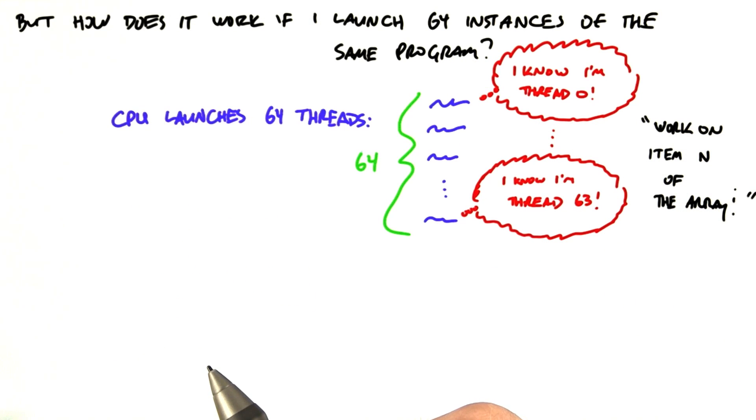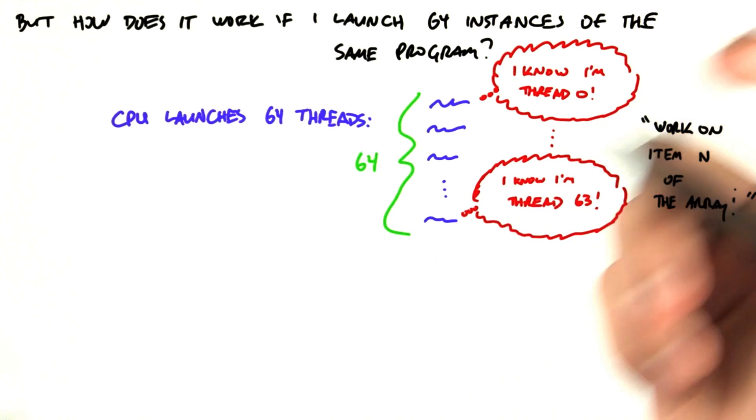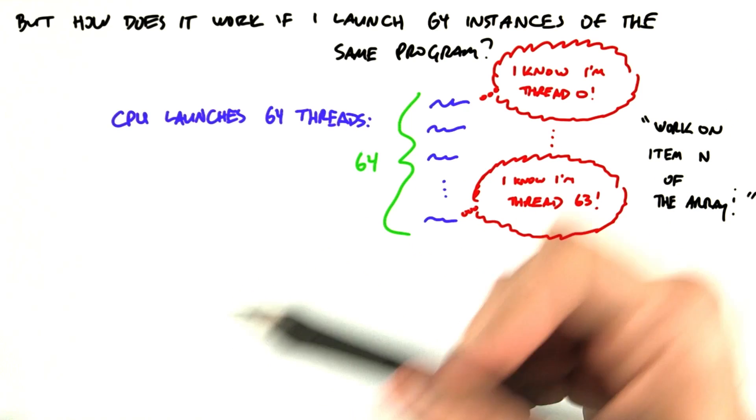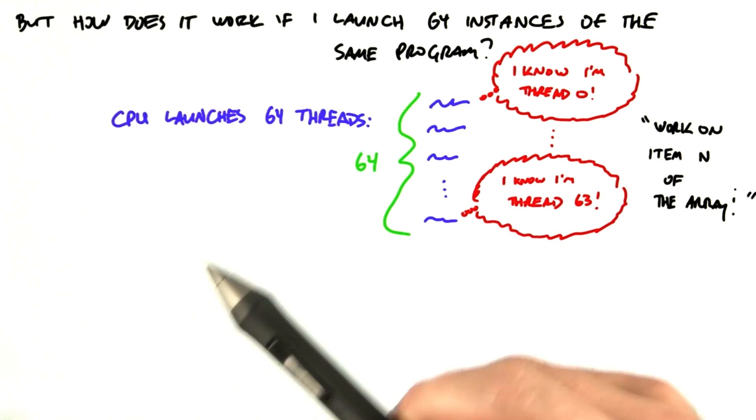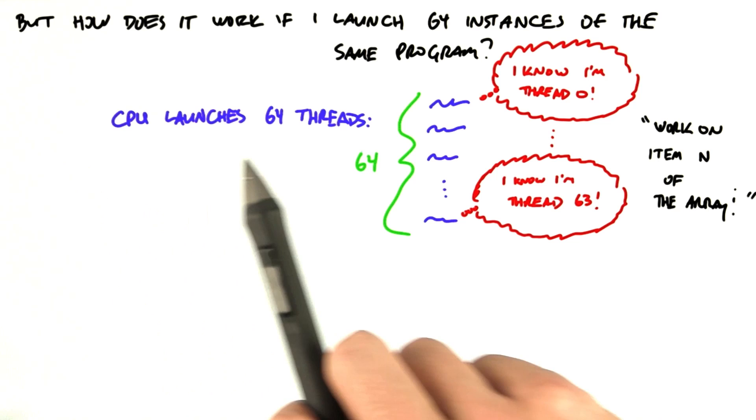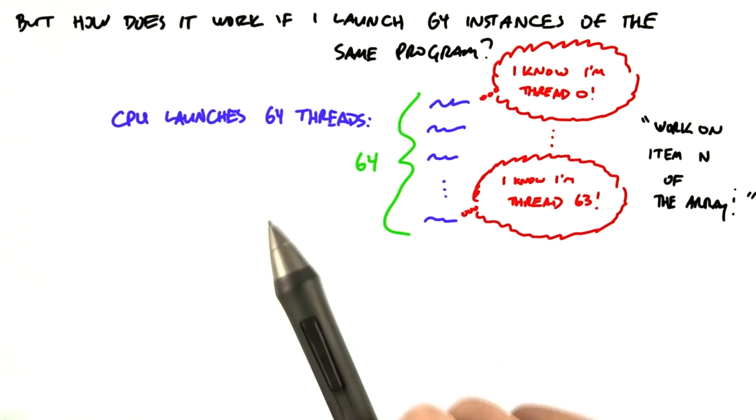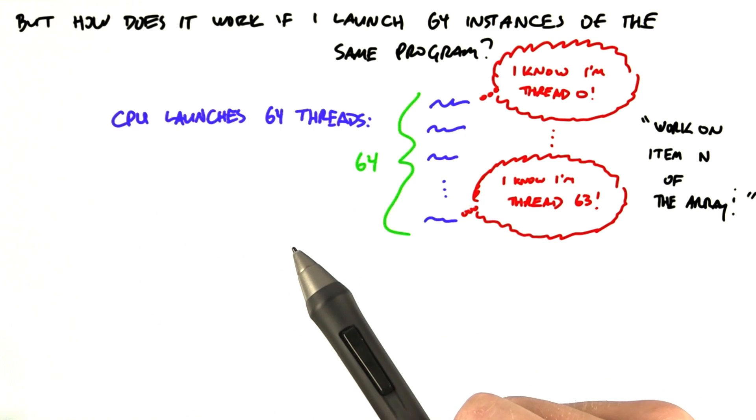Now, one question that may be puzzling you is, what good is it to launch 64 instances of the exact same program? So here's how we answer that question. Each thread that we launch knows which thread it is. We're going to call that the thread index.